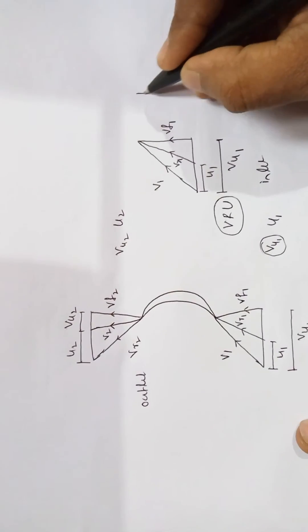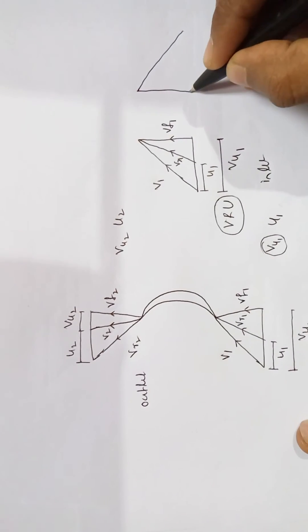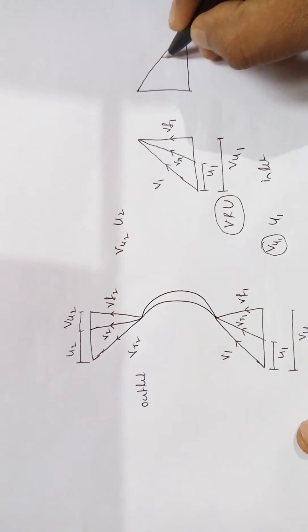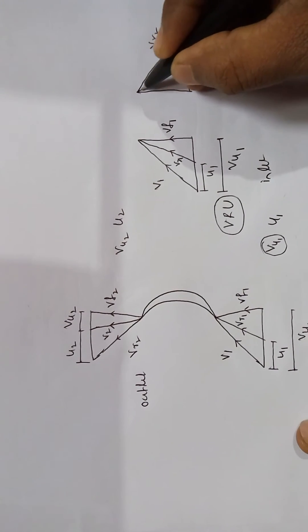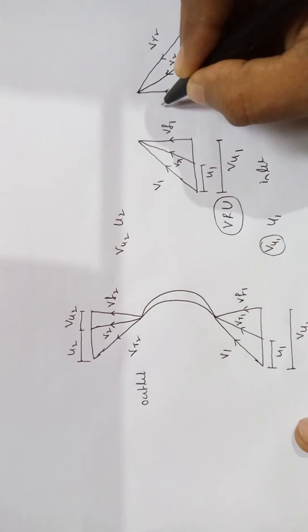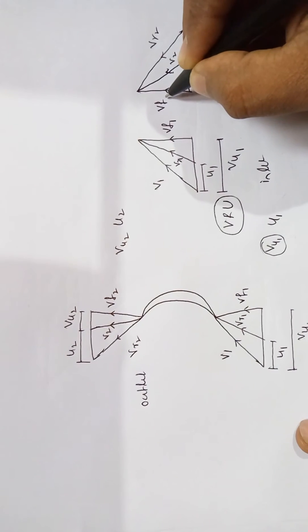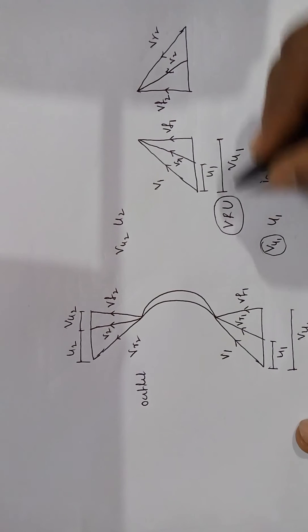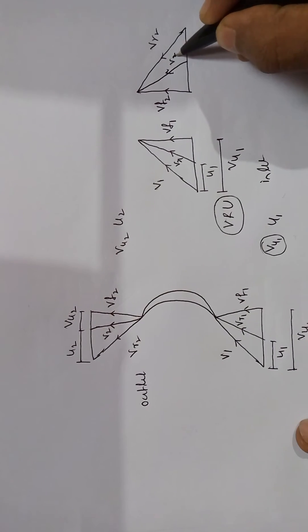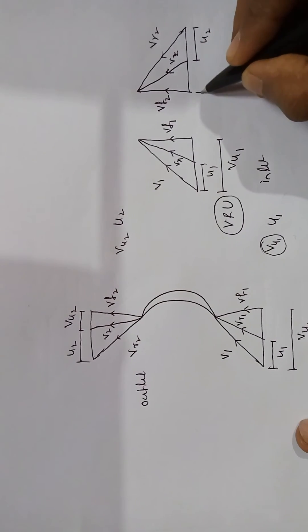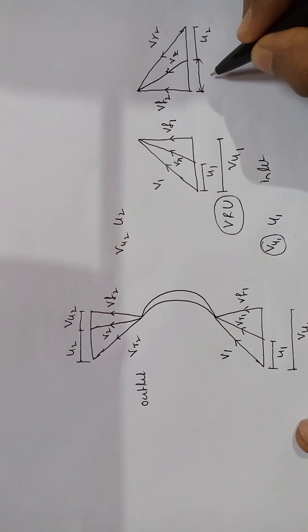Now I will write the outlet velocity triangle. Just remember the right angle triangle. The first velocity component coming from the blade at the outlet is Vr2, and this velocity changes to V2. The axial velocity component at the outlet is Vf2. For the horizontal velocity components: from V2 to Vr2 gives U2, and from V2 to Vf2 gives Vu2.